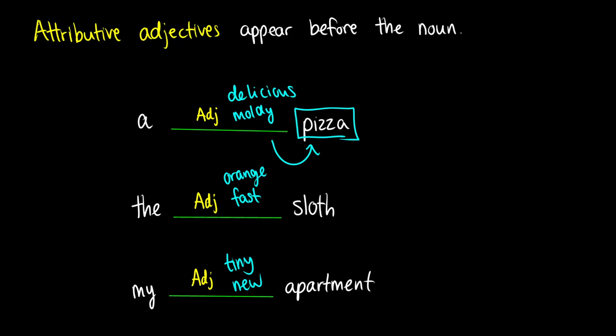These are all called attributive adjectives because they occur right before the noun. So they're usually between a determiner like a, the, my, some, and the noun itself. You can have more than one so you can say a delicious moldy pizza. That would be fine. It'd be weird to say delicious moldy pizza but you can string two adjectives or three adjectives or four adjectives together. That's okay.